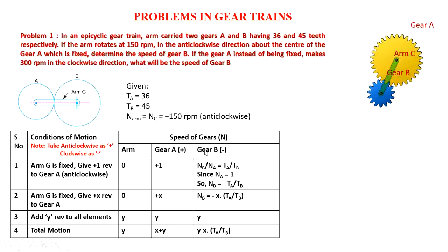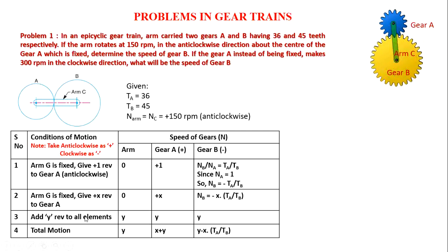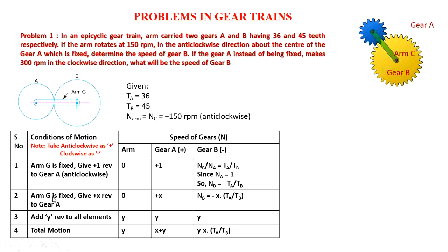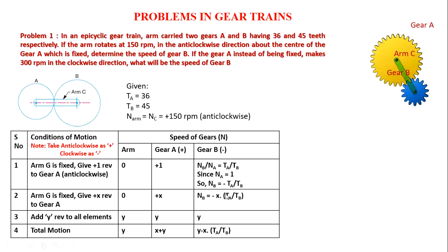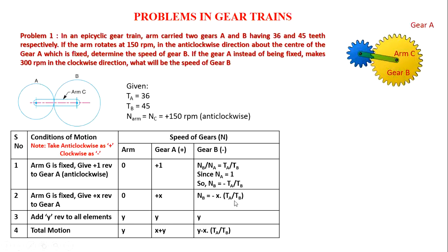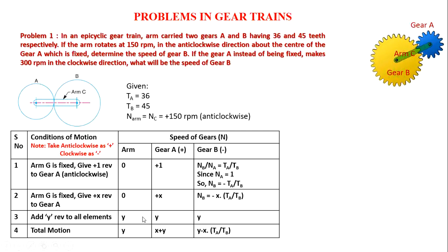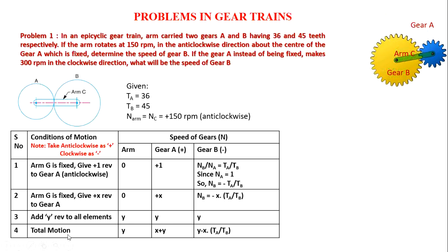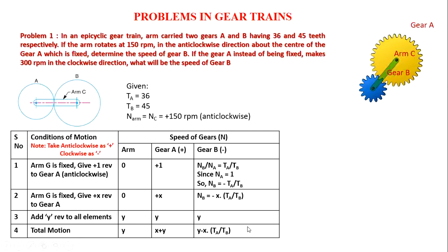Now, arm C is fixed; give plus X revolutions to gear A and multiply X with all elements: arm gets zero times X equals zero, gear A gets X, gear B gets minus X times TA/TB. Then add Y to all elements. Total motion: arm C equals Y, gear A equals X plus Y, gear B equals Y minus X times TA/TB.